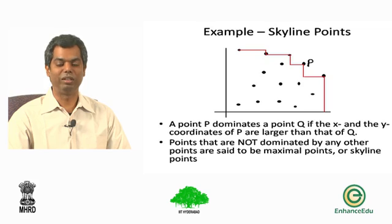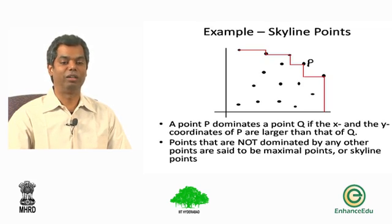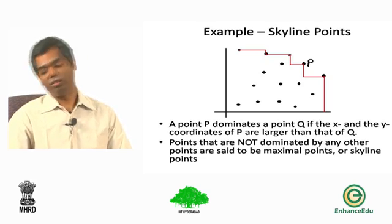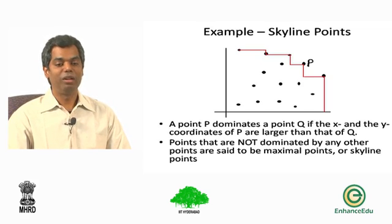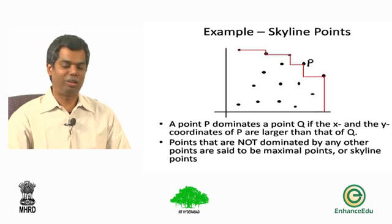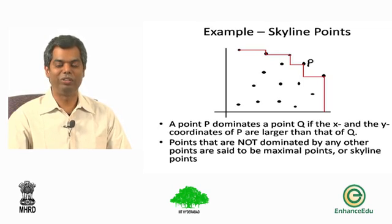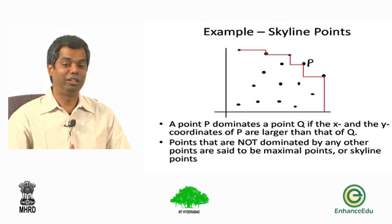So we are talking about flight tickets. The points on the skyline or the maximal points are somehow the best choices in some sense. You have to pick one of those to say that what you want in terms of cost and arrival or departure is kind of balanced eventually.